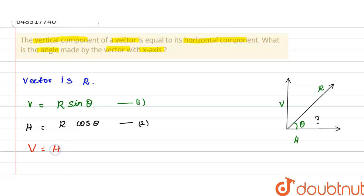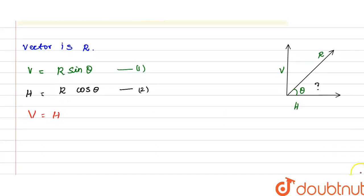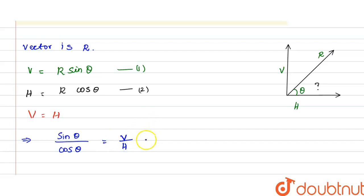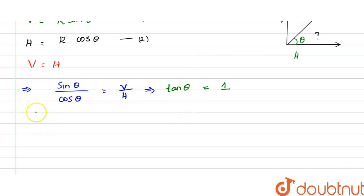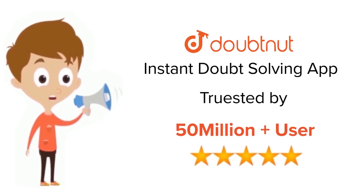Since V = H, we divide the first equation by the second. We get sin θ divided by cos θ equals V divided by H, which equals 1. Since sin θ / cos θ = tan θ, we have tan θ = 1. Therefore, θ = 45 degrees. This is the answer.